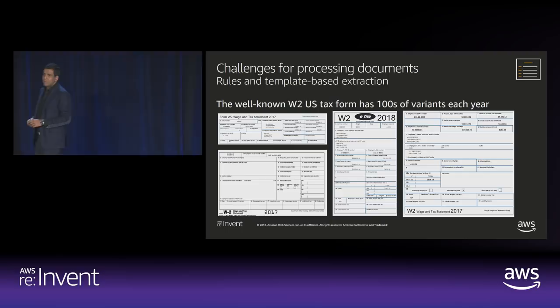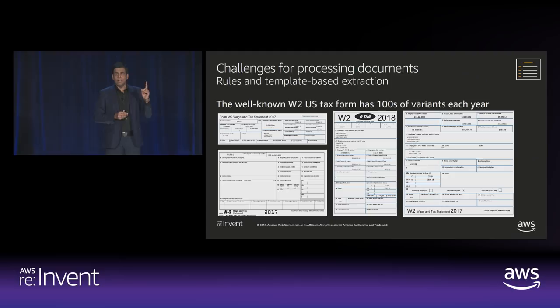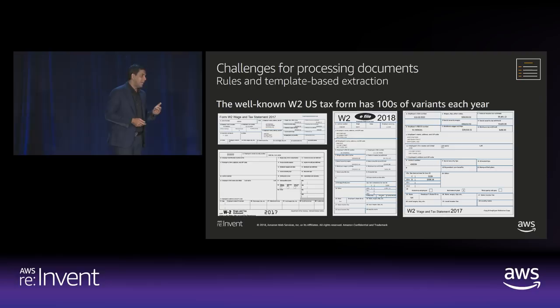To show you why templates don't scale: we found hundreds of different variants of the W-2 form — the same information, just laid out differently, with different ordering and positioning. If you want to build a system to extract information from W-2 forms, you need to maintain a separate template for each variant. That's a very difficult problem, and it doesn't scale at all.